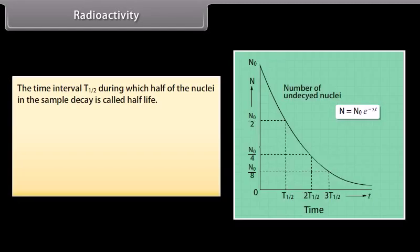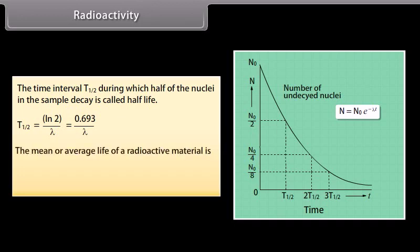Radioactivity. The time interval T half during which half of the nuclei in the sample decay is called half life. T half is equal to N2 by lambda, which is equal to 0.693 by lambda. The mean or average life of a radioactive material is Tau, which is equal to 1 by lambda.